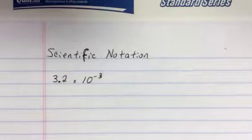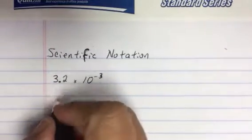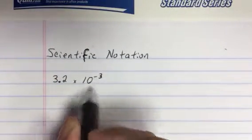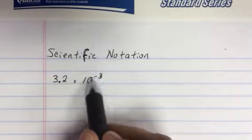3.2 times 10 to the negative third. That's scientific notation and this is a very small number. Why? It has a negative exponent.